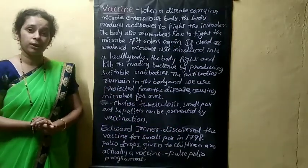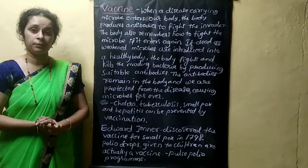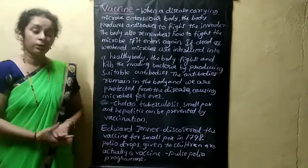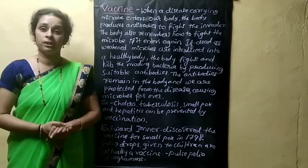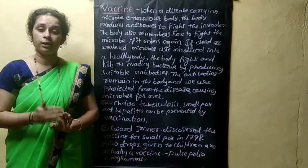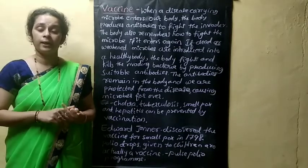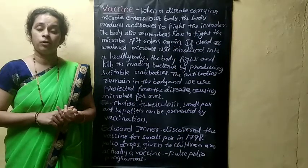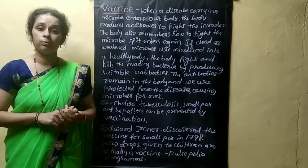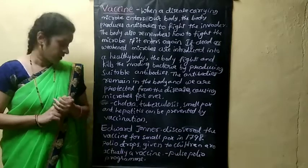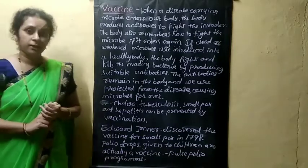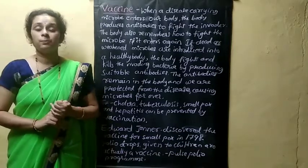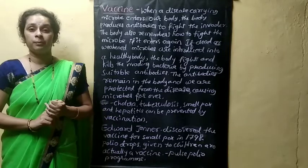You have to collect another activity — information about Edward Jenner. Now what you have to collect is information about both Alexander Fleming and Edward Jenner. You have to collect information about these two scientists.